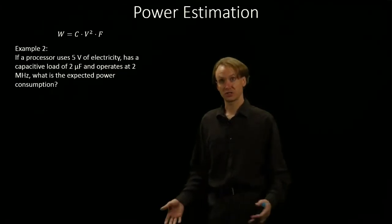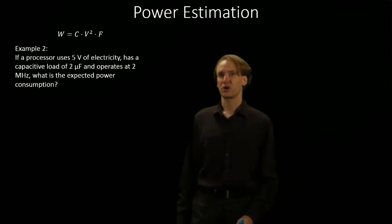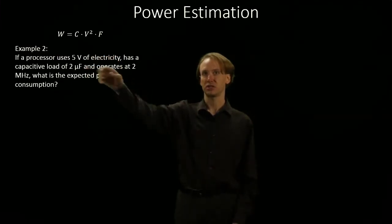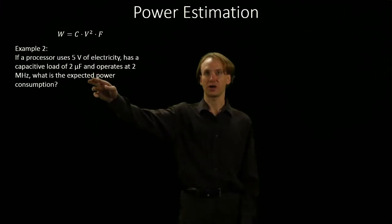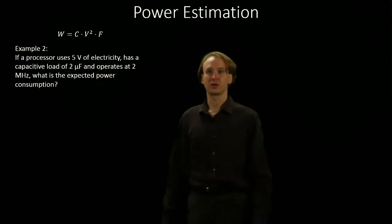Our second example is pretty similar to our first example. We've still got a processor using 5 volts of electricity. This time it's got a capacitive load of 2 microfarads and is running at 2 megahertz.